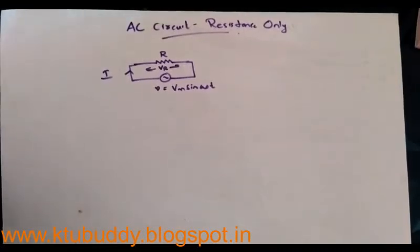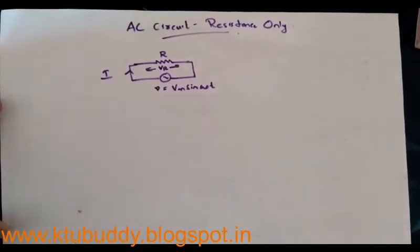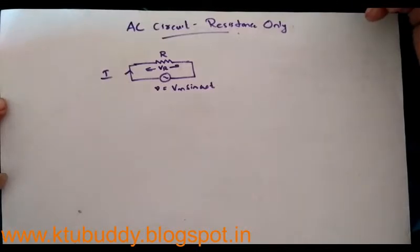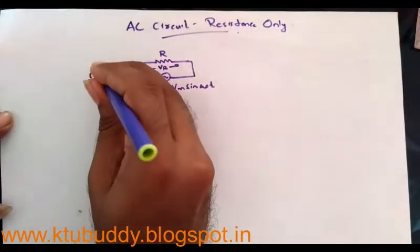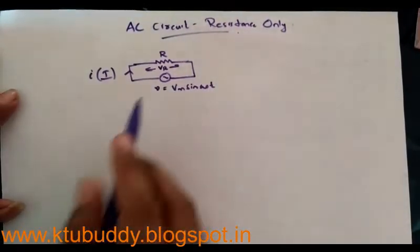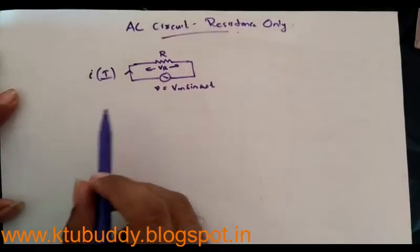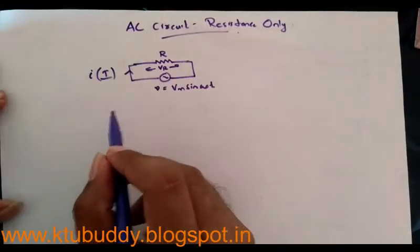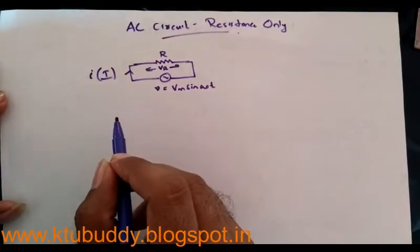Good evening. Let's go through the analysis of AC circuits. First, I am considering an AC circuit with a resistance only — a resistance R connected across a sinusoidal voltage supply given by V = Vm sin(ωt). If connected like this, a current I will start to flow through the circuit. During the positive half cycle, current flows in one direction, and in the negative half cycle, current flows in the opposite direction — that is, alternating current flows through the circuit depending upon the polarity of the source voltage.